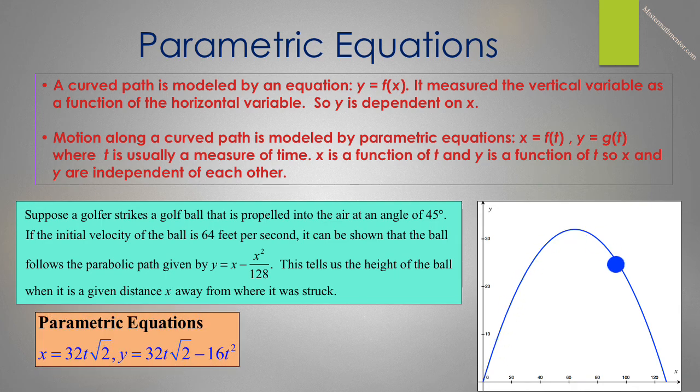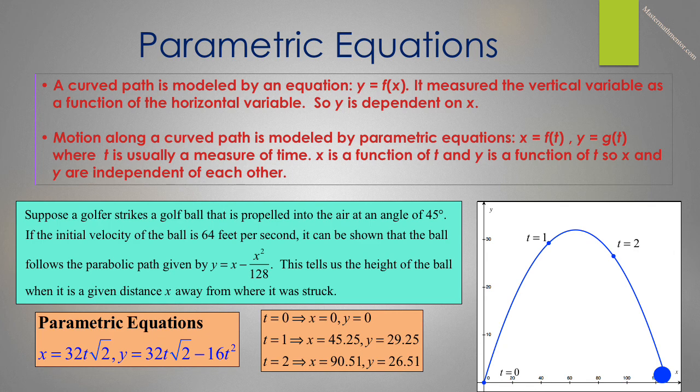We generate the very same curve with the parametric equations x equals 32t square root of 2 and y equals 32t square root of 2 minus 16t squared. Since these are functions of t, we can plug in different values of t to determine where the ball is at specific times. At time equals 0, the ball is at point 0,0. At time equals 1, the ball is at point 45.25, 29.25. And at time equals 2, the ball is at point 90.51, 26.51. Time does not show up on the graph. It is invisible, but it is the controlling factor in determining where the ball is. That is why parametric form is so important.